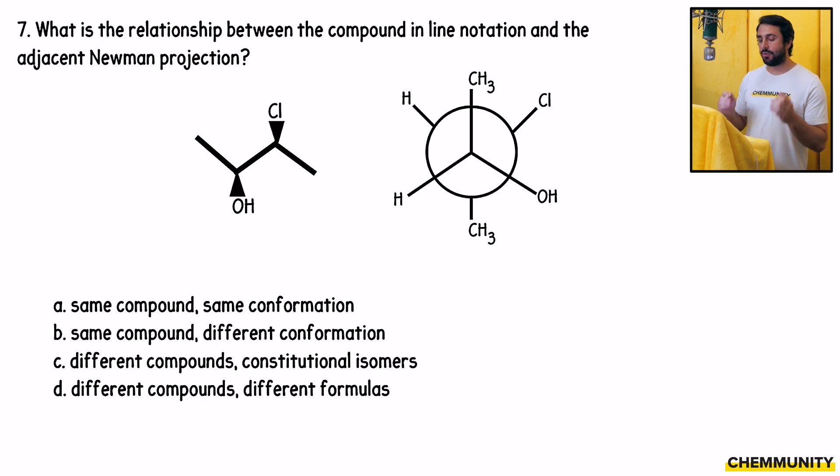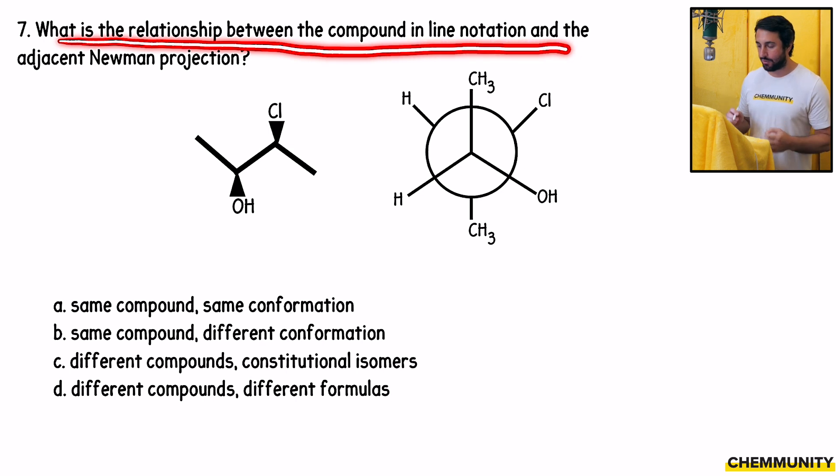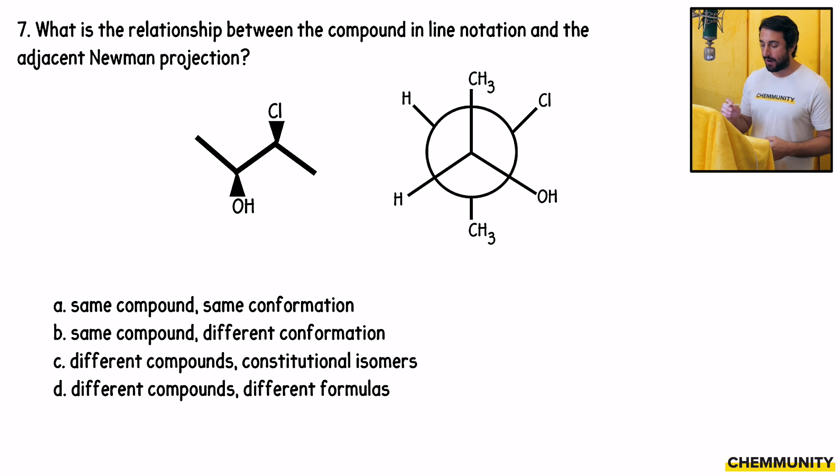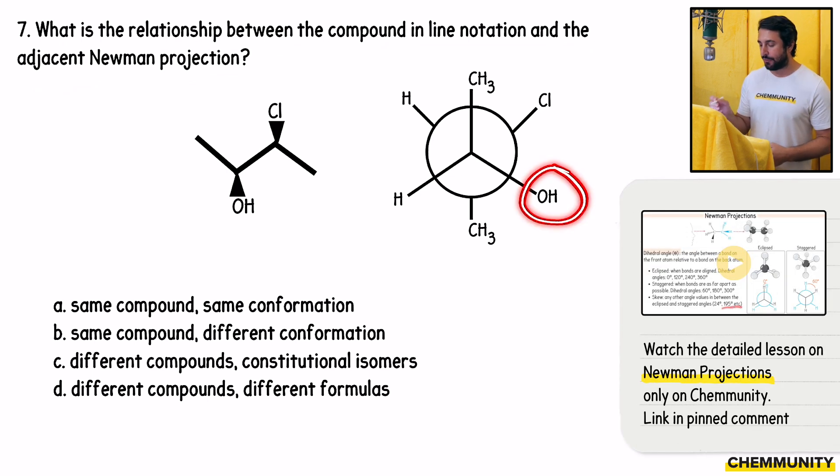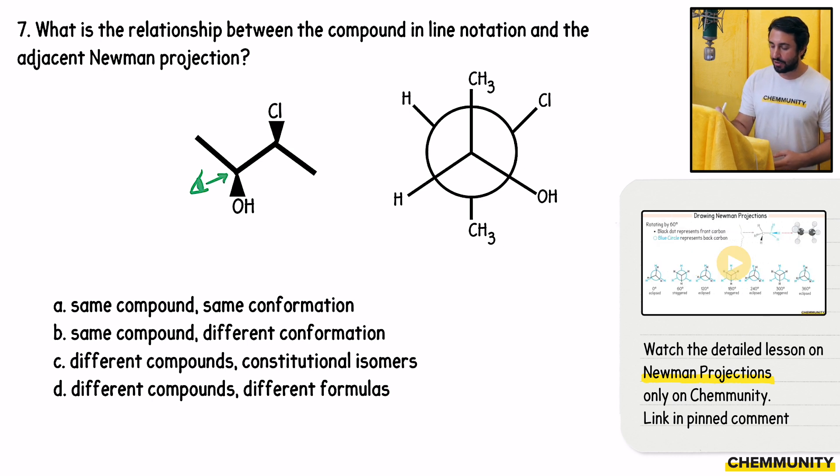Seven asks, what is the relationship between the compound in line notation and the adjacent Newman projection? Very clearly looking at this Newman projection, we've got an OH on the front and a Cl on the back. So we're definitely looking at this like this. We are looking down this carbon-carbon bond right here. So that is the carbon-carbon bond that we cannot see. It is obscured by the carbon atom that we are looking at.